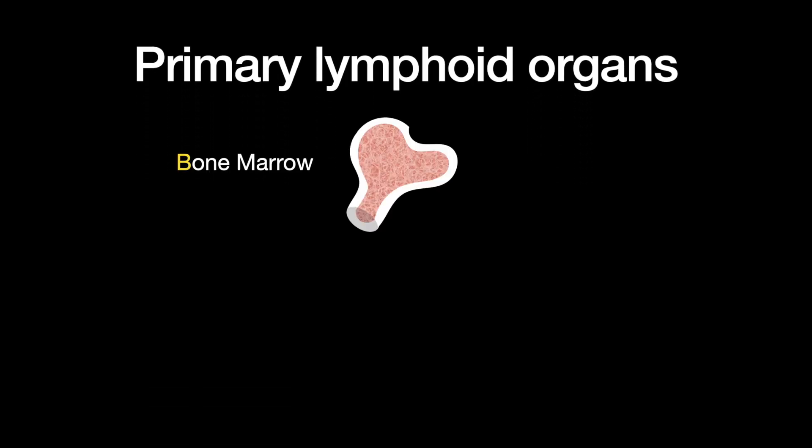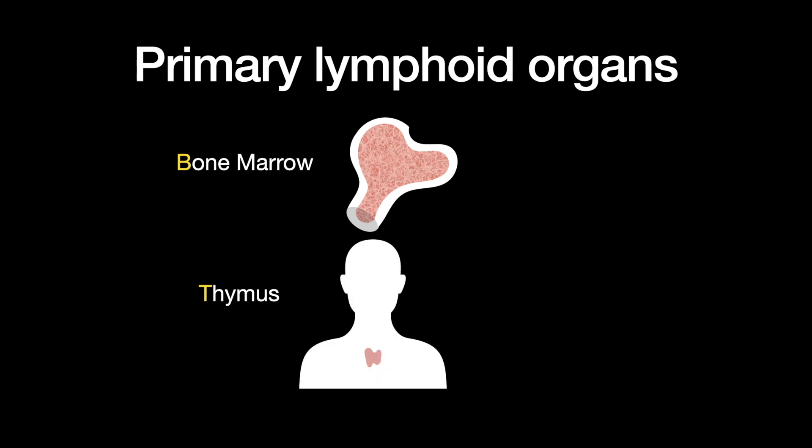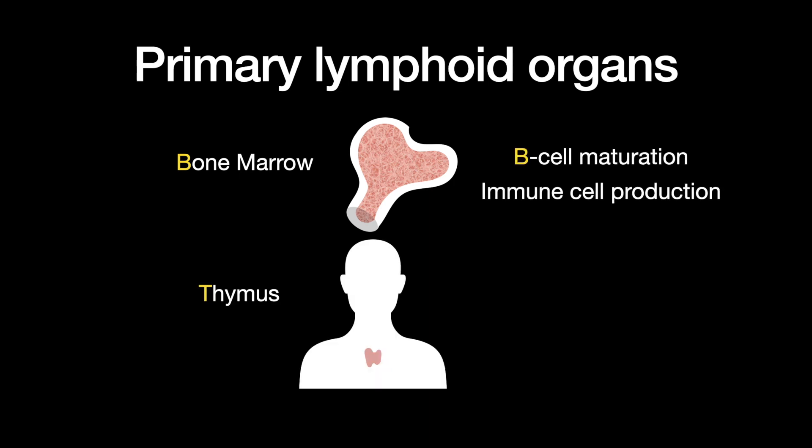The primary lymphoid organs include the bone marrow and thymus. The bone marrow is where B cells mature and immune cells are produced. The thymus is where T cells mature.